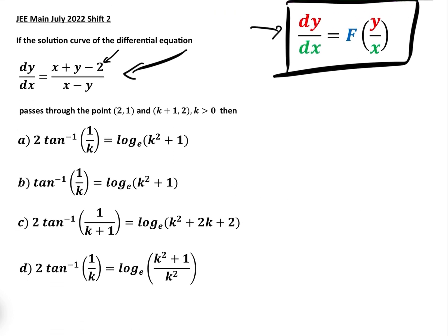Let's have a look at this question. This is from the JEE Main July 2022 Shift 2. We have the differential equation, we're told that it passes through two given points, and then we have four equations, one of which is correct. We're going to solve the differential equation, find the initial condition to get the constant of integration, and then input the second point to find the solution.